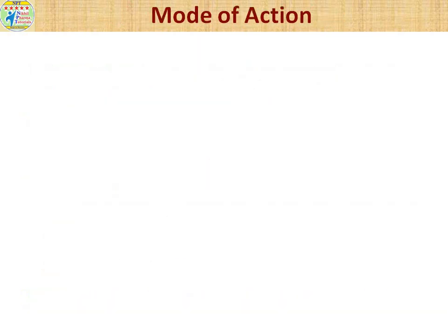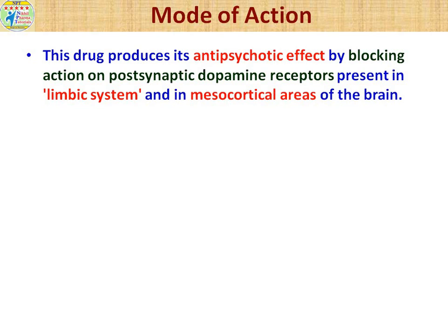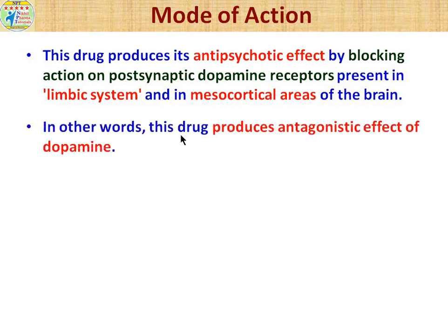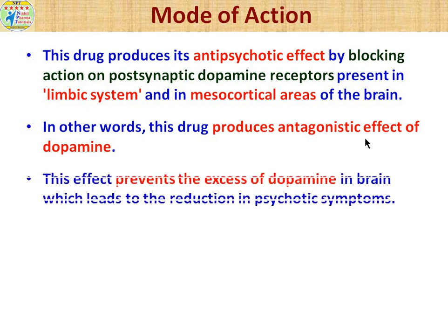Now let's talk about the mode of action. Chlorpromazine drug produces antipsychotic effects by blocking post-synaptic dopamine receptors. These receptors are present in the limbic system and mesocortical areas of the brain. In other words, the drug shows antagonistic effects on dopamine, meaning the brain's dopamine level effectively does not increase, and ultimately the different types of psychotic symptoms are reduced.